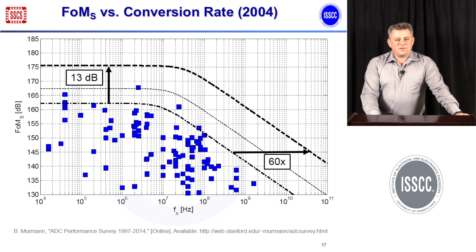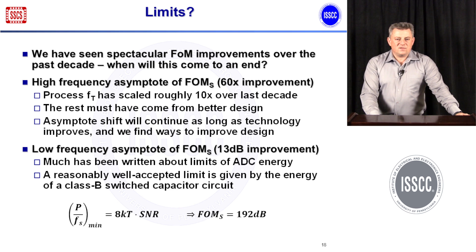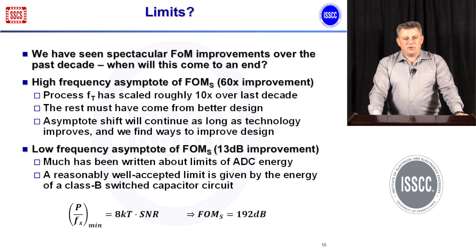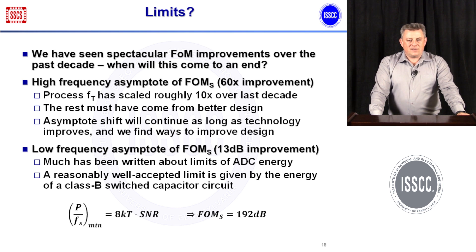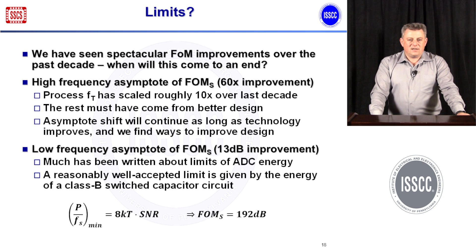This enormous progress rate begs the question: how far can we go? For the high-frequency asymptote, the 60× improvement over the last decade is most likely linked in large part to the FT improvement of transistors, which have gotten about 10× faster in 10 years — explaining a factor of 10 of that 60. The rest, in my opinion, came from better design and interesting new architectures. As long as we continue to be creative and technology keeps scaling, we should be able to advance this asymptote further.